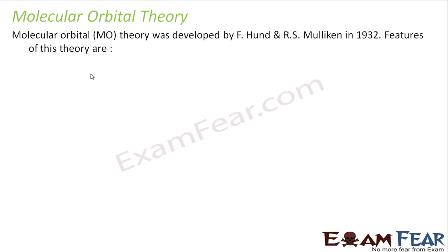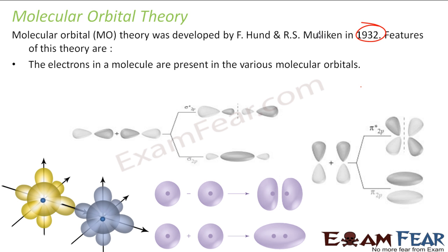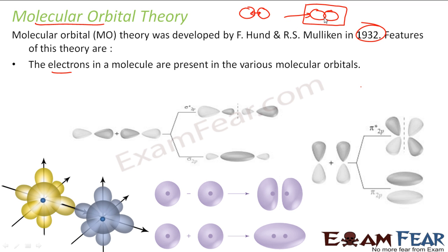This theory was developed in 1932. Its key feature is that electrons in molecules are present in various molecular orbitals. The whole perspective is different here — the other theories talk about atoms and their overlap, but this theory says: if I have a molecule, I will view the molecule as one piece. The way we have orbitals in atoms, we have orbitals in molecules.